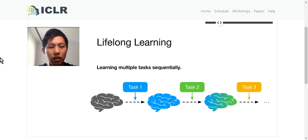Lifelong learning is the process of learning multiple tasks sequentially. The model will first learn task 1, then task 2, then task 3, and so on and so forth.